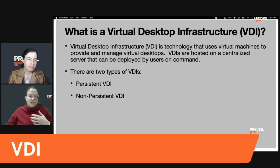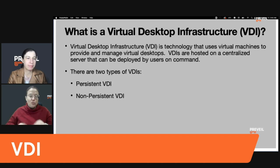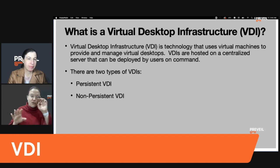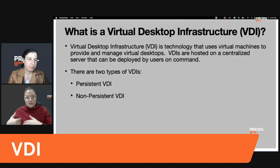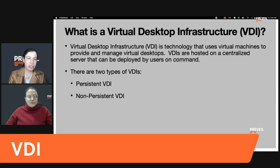Non-persistent VDI is different — every time you log in it's a generic machine. Whatever you do stays only in that session; the minute you disconnect, it's gone. So if you hooked up your Outlook email in a non-persistent VDI session, the minute you leave that session and come back, that Outlook configuration is gone. That's the big difference between the two types.